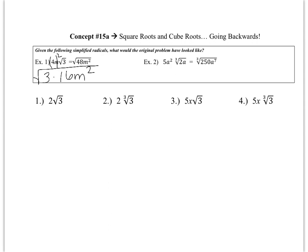For cube roots: if I'm going to pull something out of a cube root, the opposite of finding the cube root is cubing something. So you take the stuff on the outside — which was 5a squared — and cube it. Already on the inside was 2a. I'm cubing 5, which is 125, and cubing a to the second — with a 3 outside parentheses, you multiply the exponents to give you a to the 6th. Now putting that together: 2 times 125 is 250, and a times a to the 6th is a to the 7th.